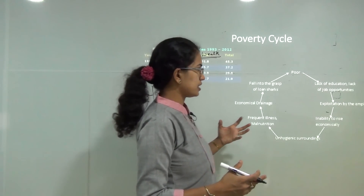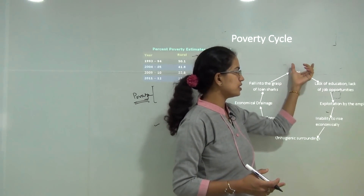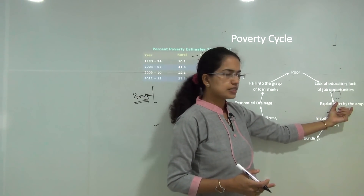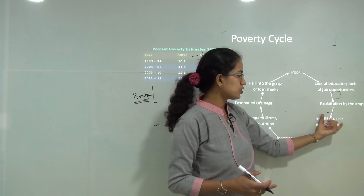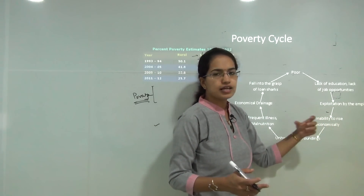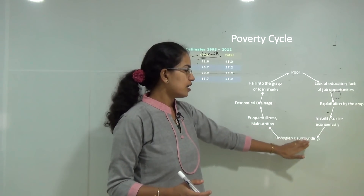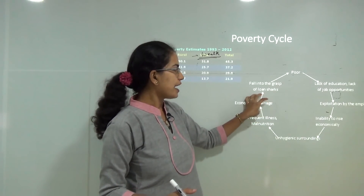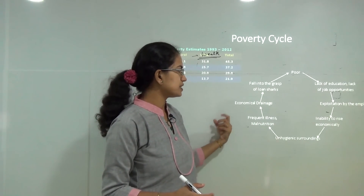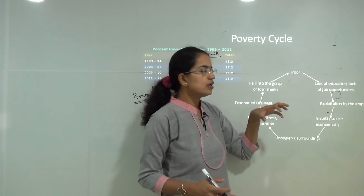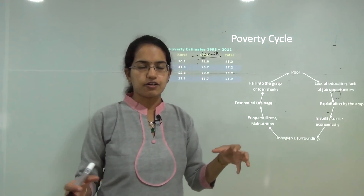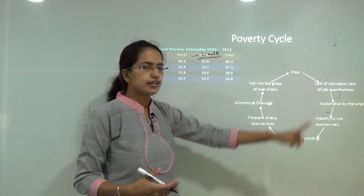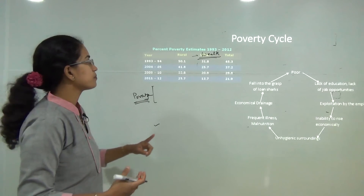Poverty acts like a vicious cycle. If a person is poor, there is lack of education and lack of jobs, which leads to exploitation by employers and instability in the economic setup. As a consequence, there are unhygienic surroundings, malnutrition, and economic drainage. The person falls into loan and finance issues, causing poverty to further increase — it is a vicious circle that goes on and on.